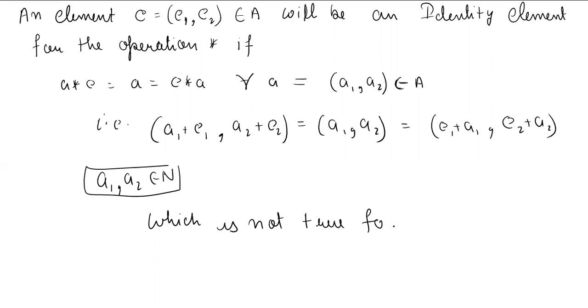Because you have to add e1 to a1. Because e1 belongs to natural numbers, e2 also belongs to the natural numbers. So if you have any natural number and any natural number, if you have to add it then you will not get it. So this will not be true. So therefore,